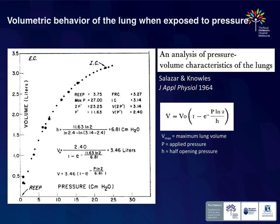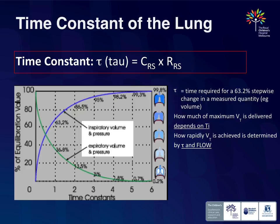You've all done pharmacology and understand half-lives of drugs — this is the same mathematical model applied to the lung. One time constant delivers 63% of the tidal volume. Three time constants gives 95%. Five time constants gives almost 100%. You want to provide an inspiratory time of at least three time constants for that baby. So if anyone says 'I always set my inspiratory time at 0.3,' they're either only ventilating one baby or they don't understand how to set it — not every baby has the same time constant or the same mechanical state.